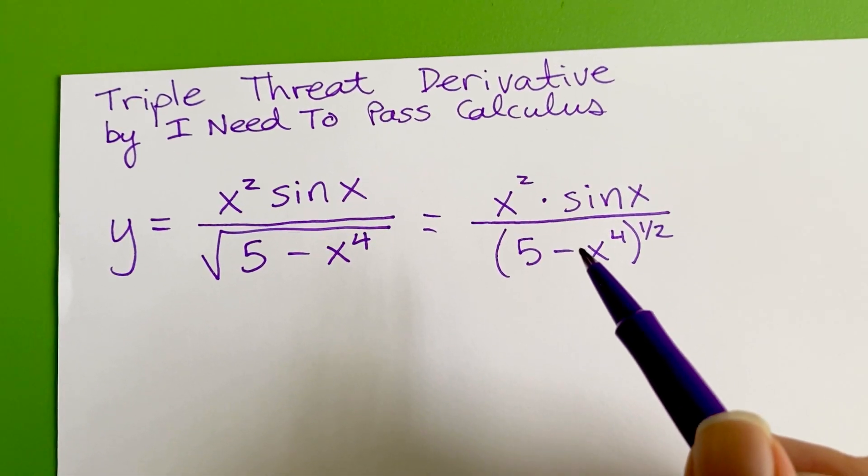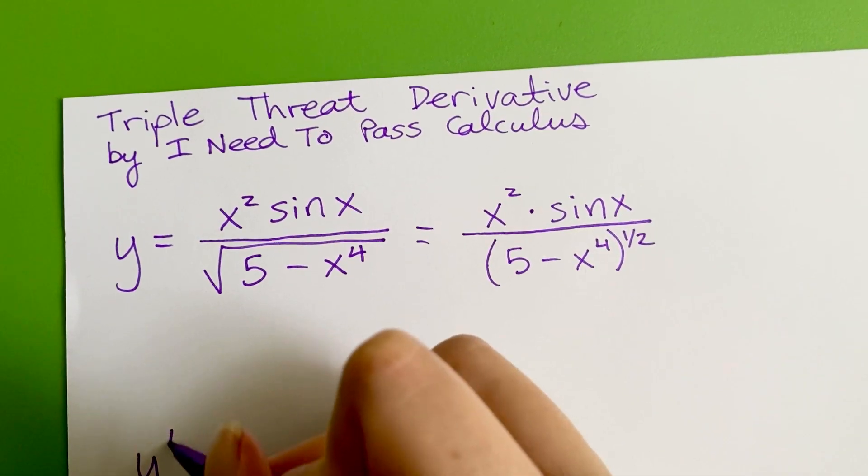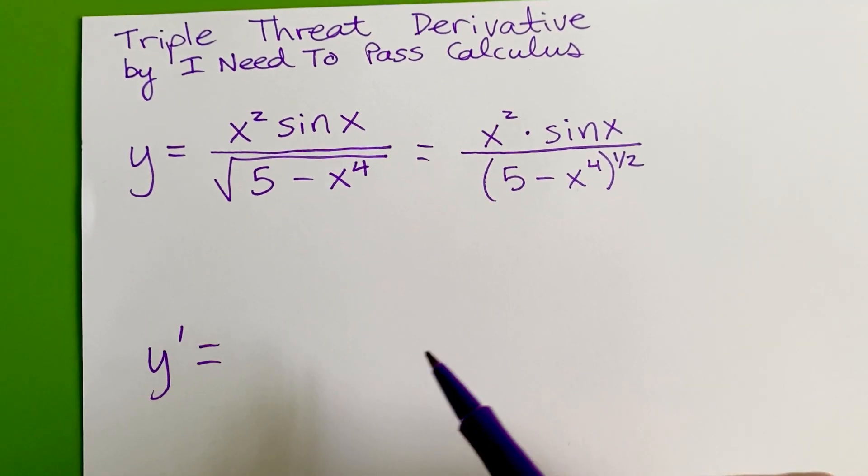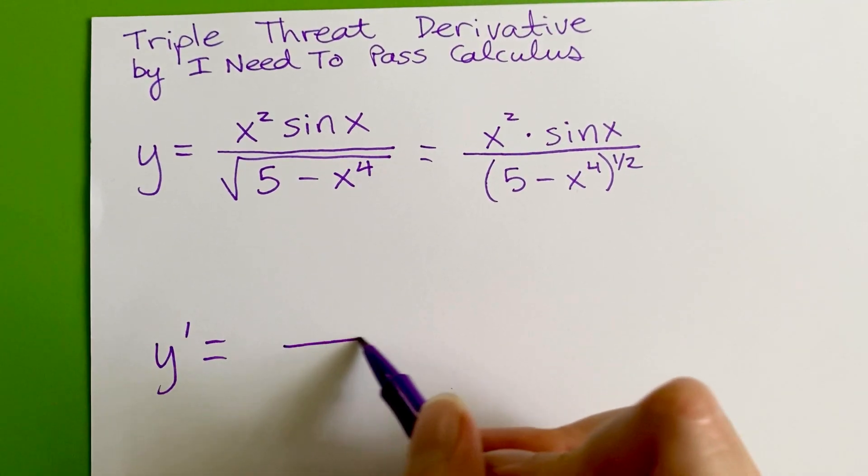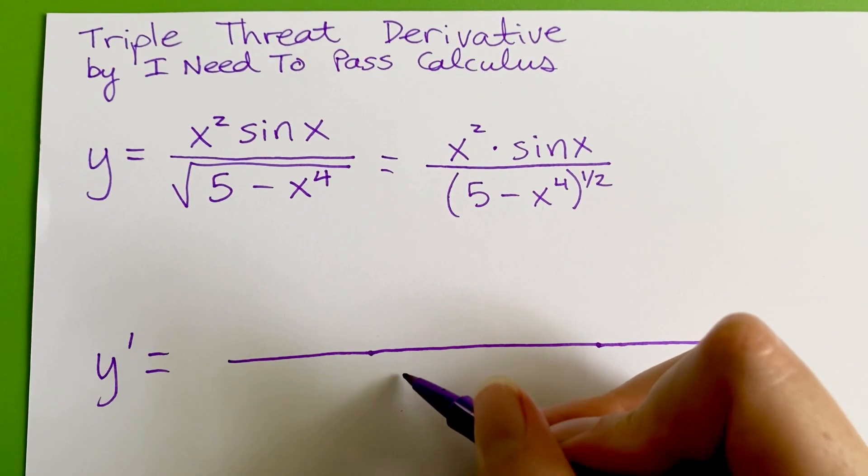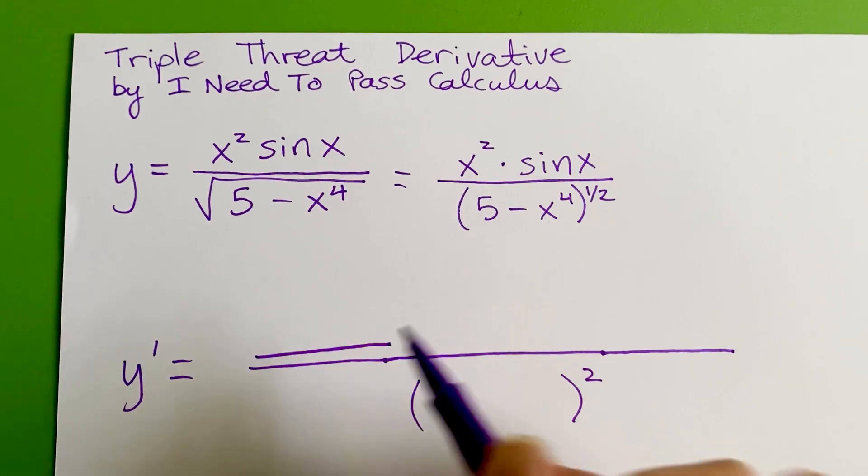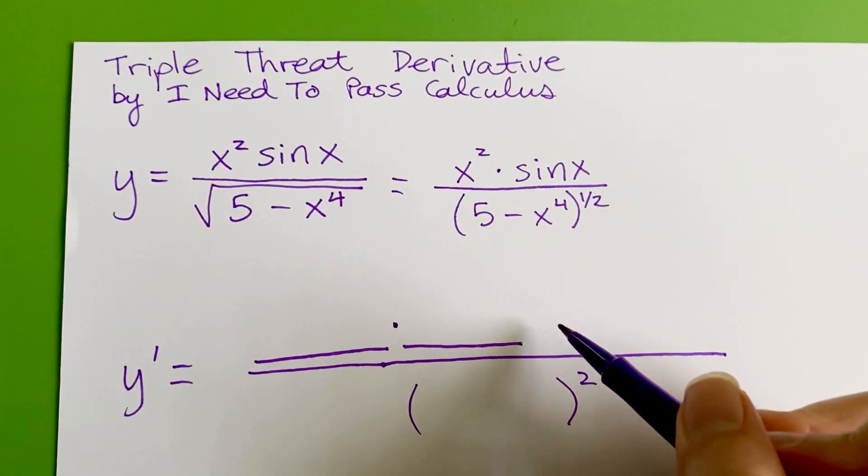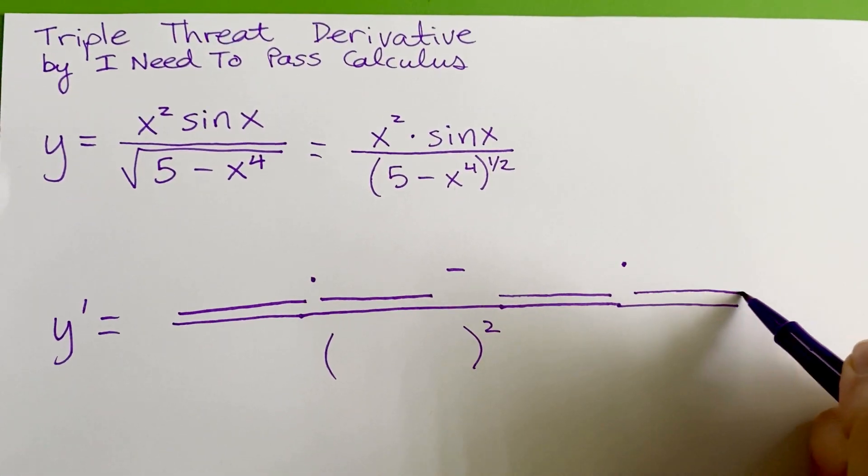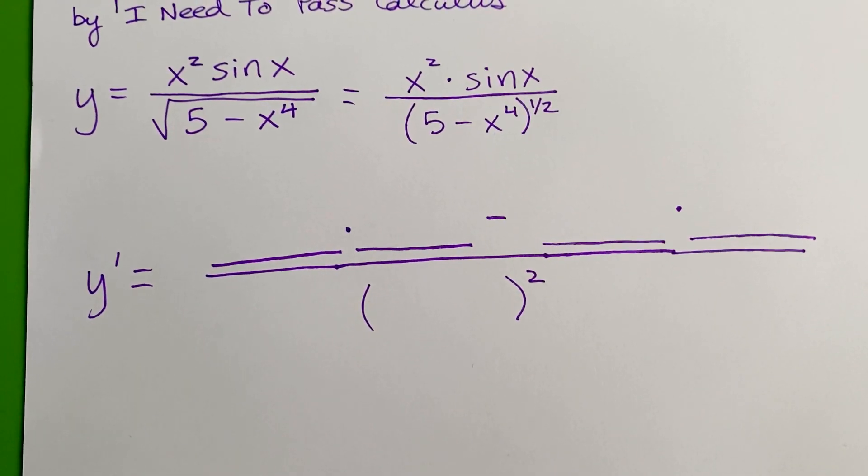So as long as you can identify what the biggest structure is, then what you can do to start is write your template for that rule. So if the biggest structure is the quotient, you can start helping yourself out by writing the template for the quotient rule. You can write a big old quotient and you know you're going to have something in the bottom being squared and you're going to have four blanks. Blank times blank minus blank times blank. It can really help if you start with a template for the more complicated problems so you don't get lost along the way.